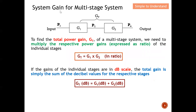Let's start by defining how to calculate the total gain for a multi-stage system. Taking reference to this diagram, the definition of total power gain: to find the total power gain of a multi-stage system we need to multiply the respective power gains. These are all expressed as a ratio of the individual stages. The total gain equals G1 in ratio multiplied by G2 in ratio, and so on, to obtain the total power gain in ratio.